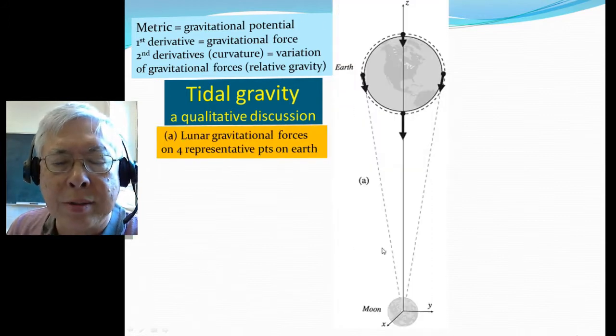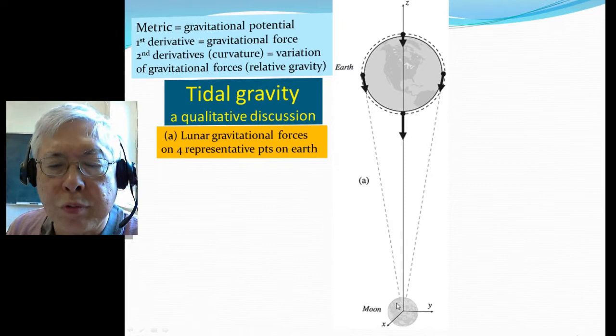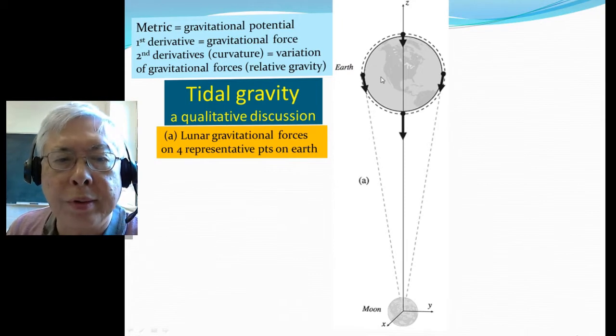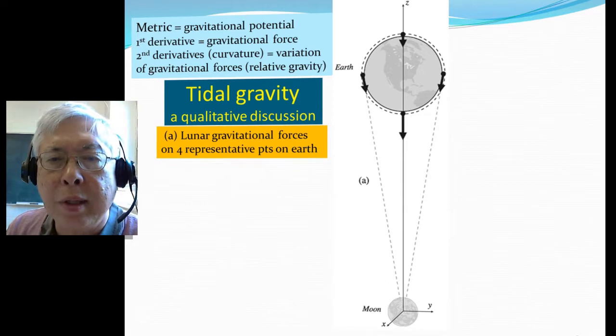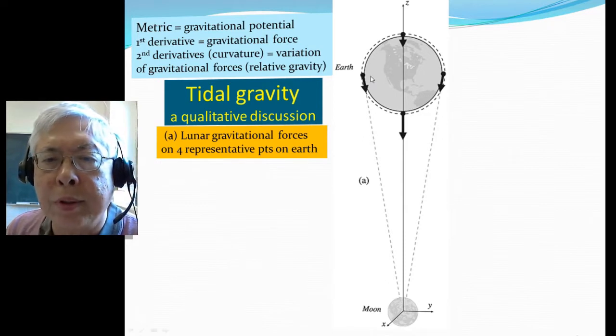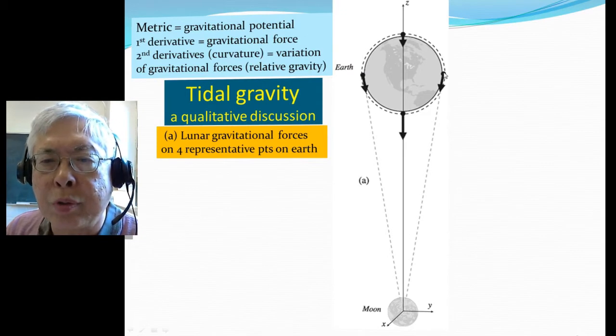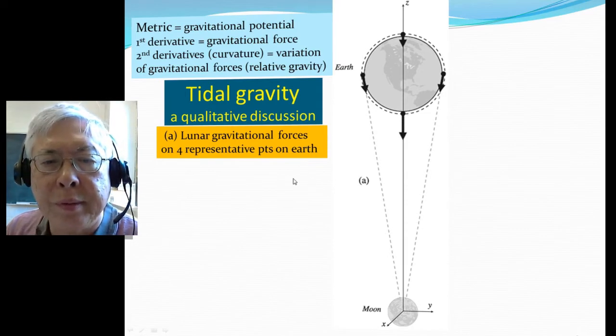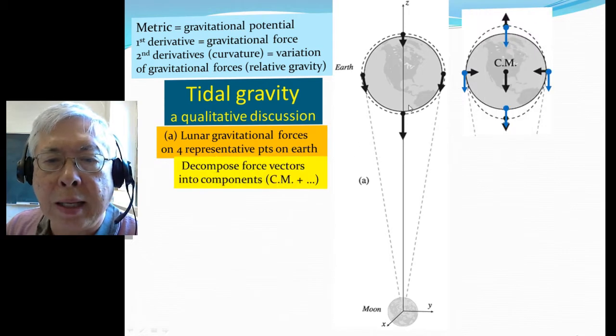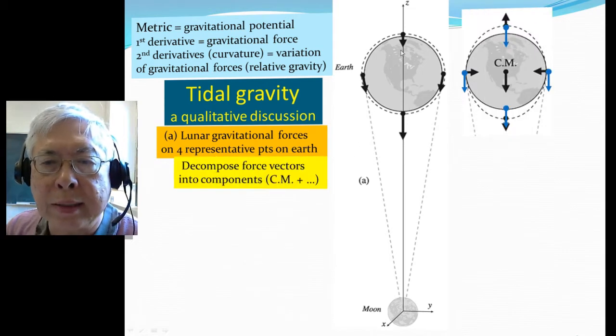Let's talk about the case of the gravitational force due to the moon on Earth. Okay, so we talk lunar gravitational force. We particularly choose four representative points, two points here in the transverse direction, and two in the longitudinal direction, one close by, one the far side of Earth.